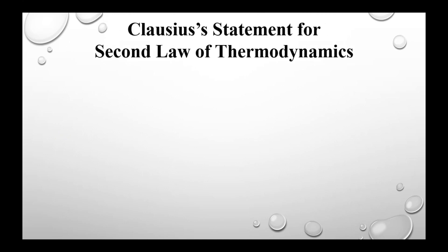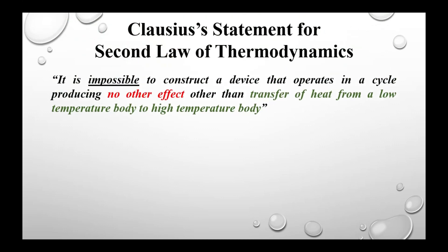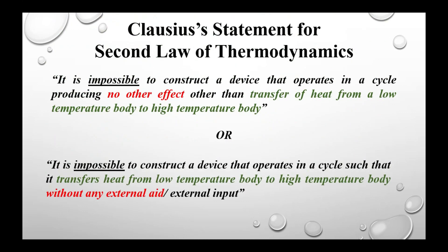Now what does the Clausius statement for the second law of thermodynamics tell us? It can be stated in two ways. The first is: it is impossible to construct a device that operates in a cycle producing no other effect than transfer of heat from a low temperature body to a high temperature body. Or it can also be stated as: it is impossible to construct a device that operates in a cycle in such a way that it transfers heat from a lower temperature body to a high temperature body without any external aid or external input.